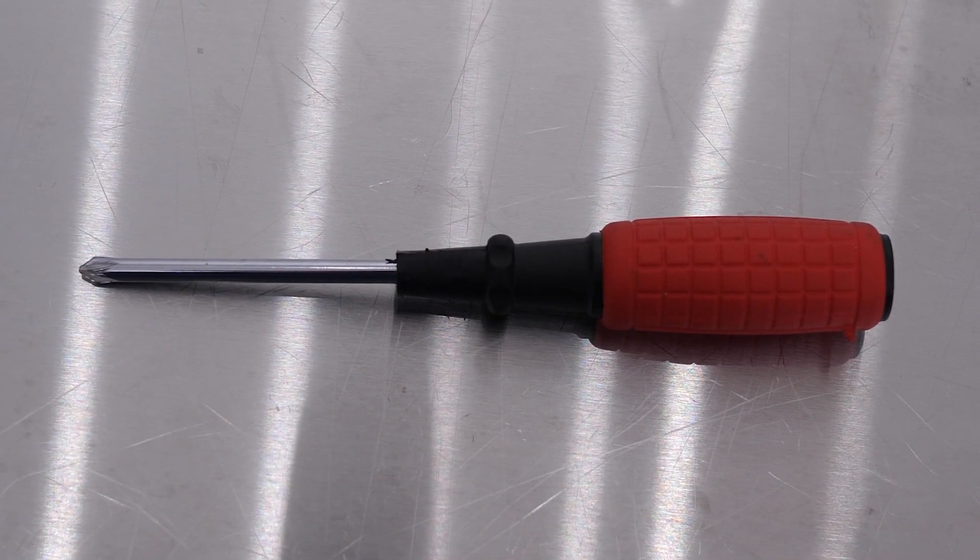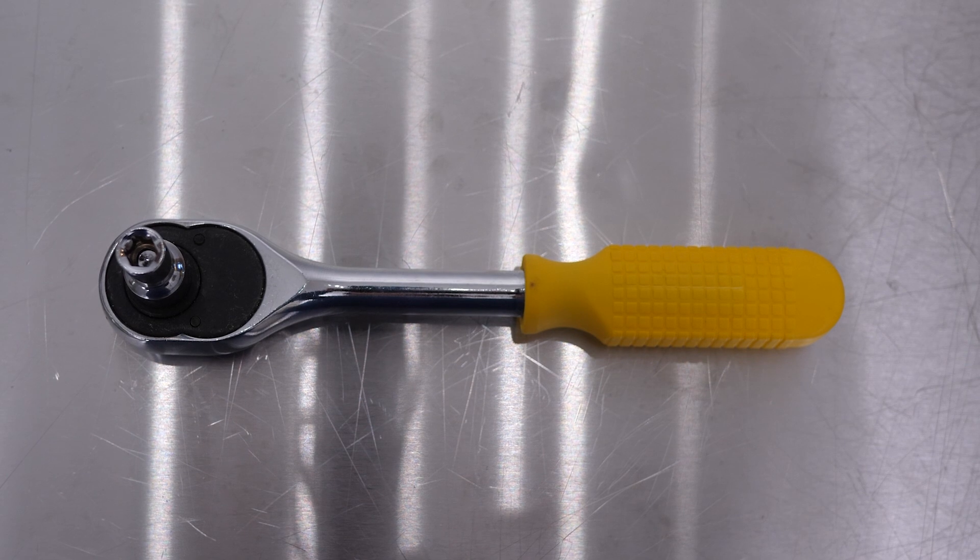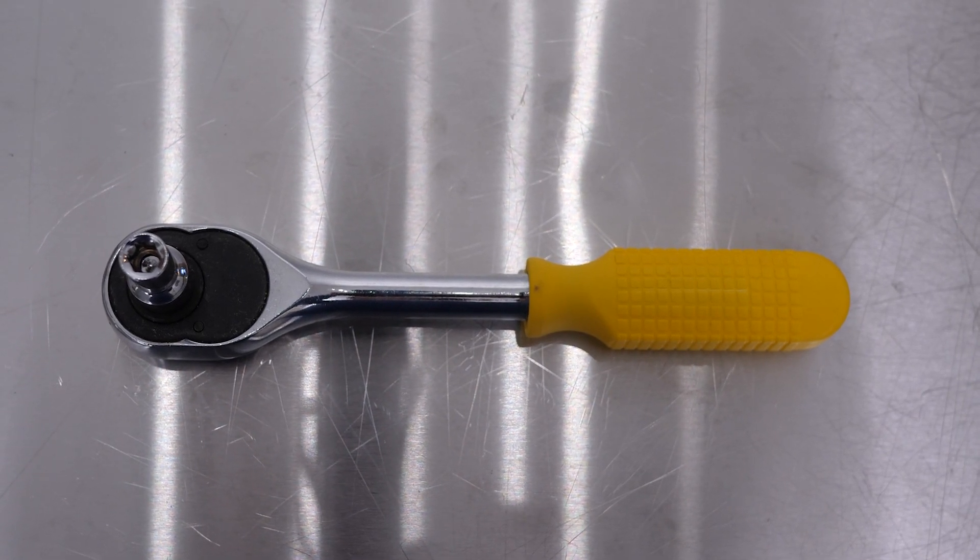You're going to need a Phillips head screwdriver and a 7 millimeter socket to tighten the ground screw. You can also just use a wrench.